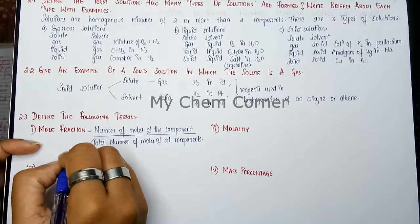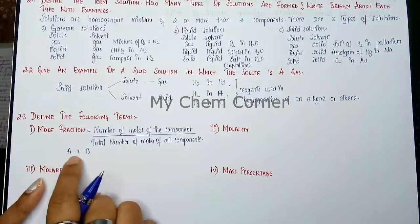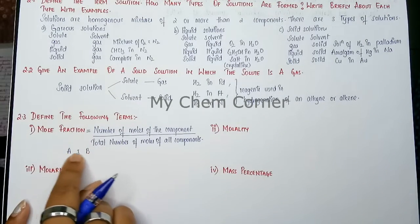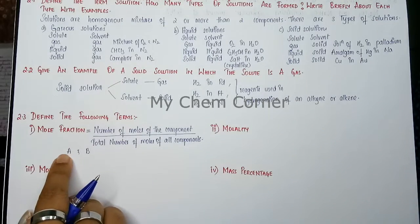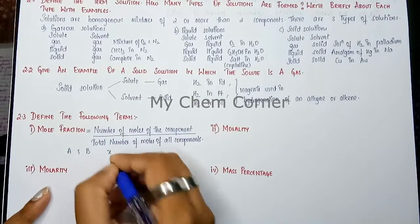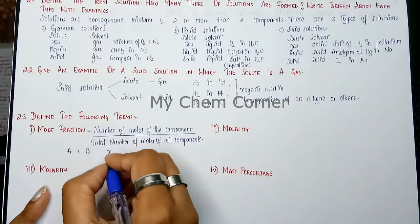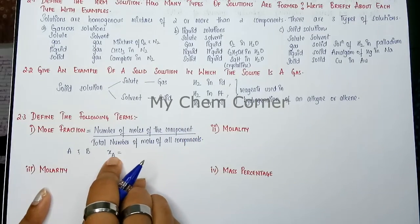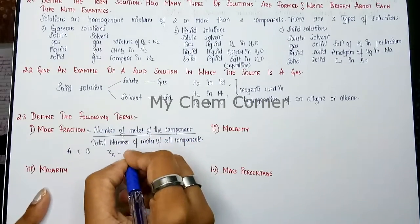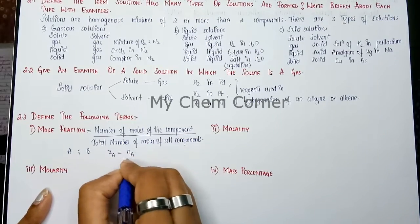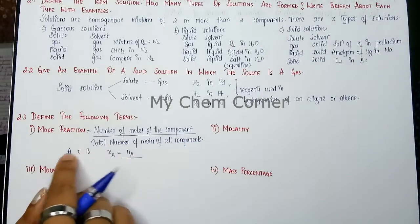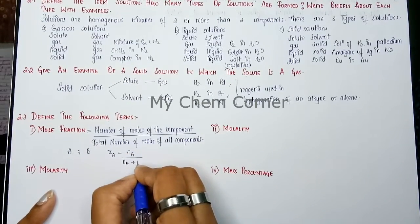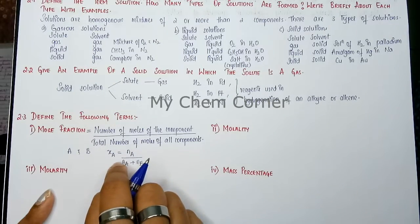Say we have component A and component B — these two components make a solution. To find the mole fraction of A and B: mole fraction is denoted as x. For component A, we write x subscript A, which equals the number of moles of component A (denoted as small n), so nA, divided by the total number of moles of all components, which is nA plus nB.